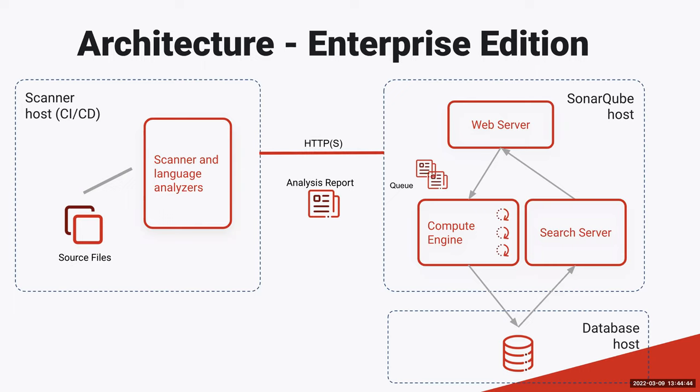A SonarQube server is made up of three main components. At the top on the right-hand side of the diagram there's a web server — an embedded version of Tomcat — which serves up the SonarQube user interface. On the bottom right is what we call the search server, an embedded version of Elasticsearch. Its job is to index key information out of the SonarQube database so the user interface can run really quickly. All of the filtering of things like rules and issues is done by pulling data out of the Elasticsearch indexes rather than running database queries.